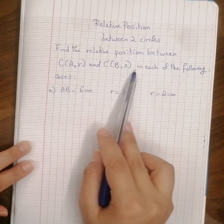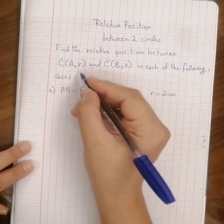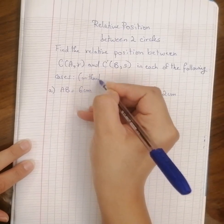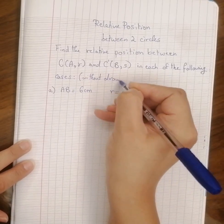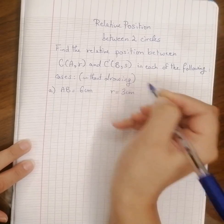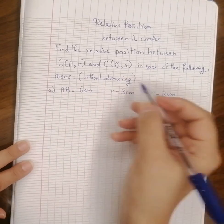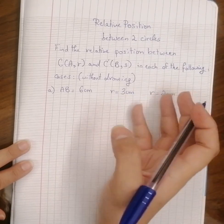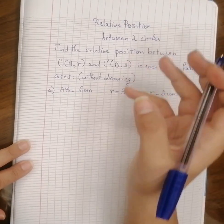In each of the following cases, but this time without a drawing. We solved it with a drawing, now without drawing how to do this? Since we know that every position between a circle and a circle is related to a certain rule.